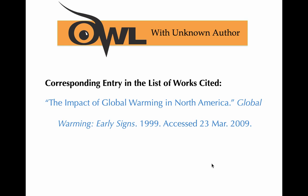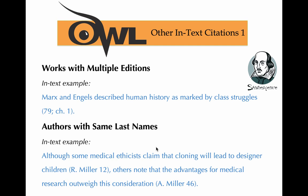The full citation shows: Global Warming: Early Signs — that's a website, 1999, with a date of access. If you have authors with the same last name and you're citing both, simply include the first initial to make a distinction — so it might be R. Miller and A. Miller. With multiple authors in MLA, once you get to three or more authors, things change. For example: the authors state 'tighter gun control in the United States erodes Second Amendment rights' — cited as (Smith et al. 76).